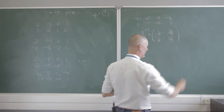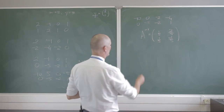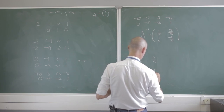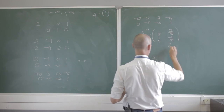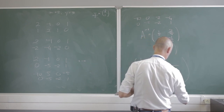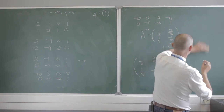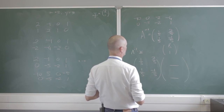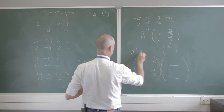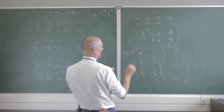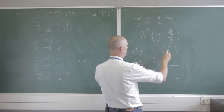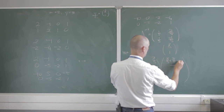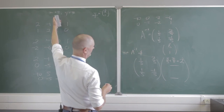Isn't that a thing of beauty? I have A inverse. Now let's test it. A inverse is: one-fifth, two-fifths, two-fifths, negative one-fifth. Multiplying that by y — the vector 8 and 1 — to give me my x and y. So this is A inverse times y. I have one-fifth times 8: that's eight-fifths, plus two-fifths, which is ten-fifths, which equals 2. And x is indeed 2.